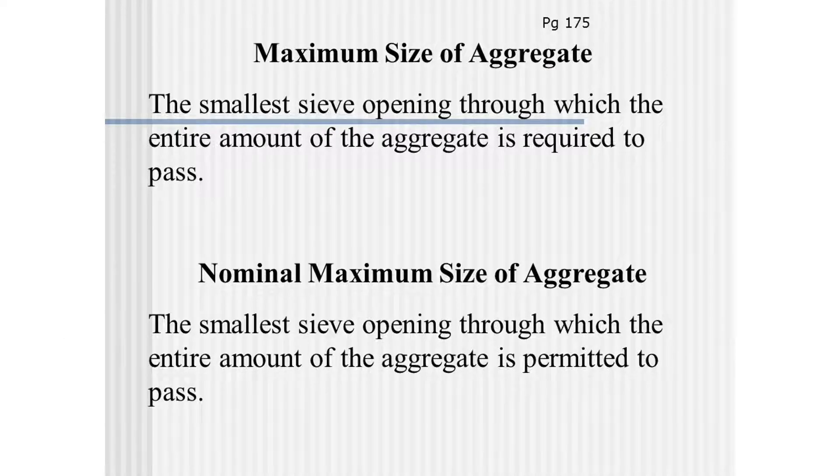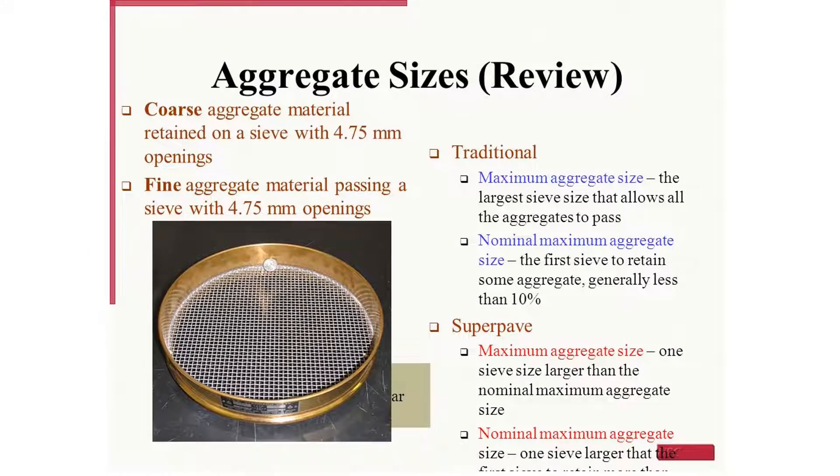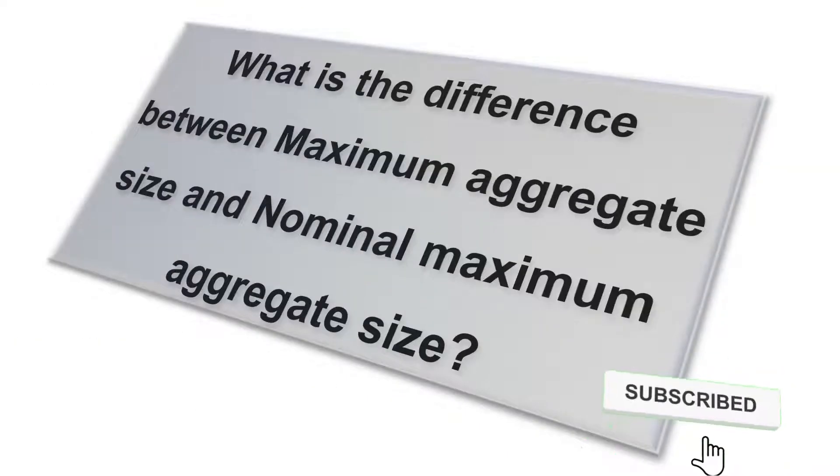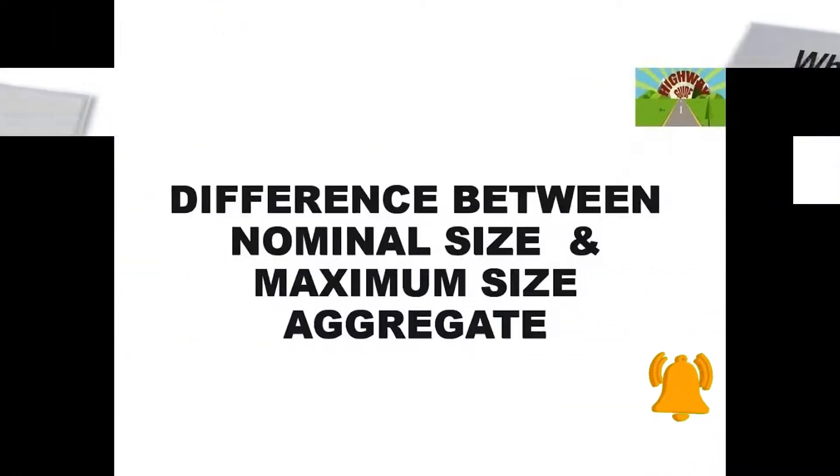As we know, the maximum aggregate size is the smallest sieve through which 100% of the sample must pass. The nominal maximum aggregate size is the smallest sieve size through which the majority of the sample passes. Up to 15% can be retained also.